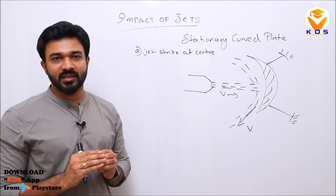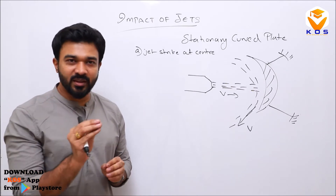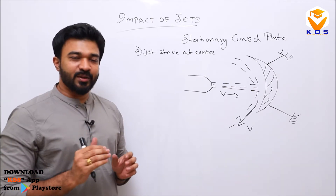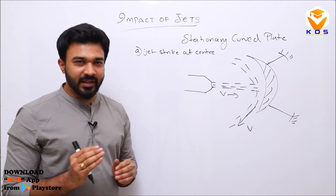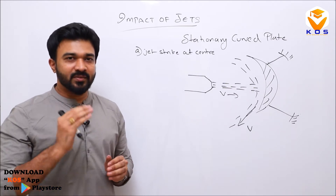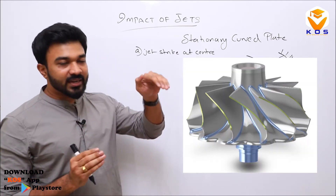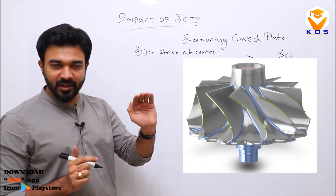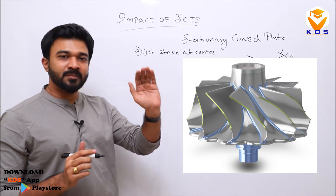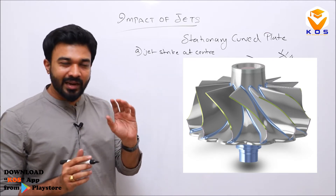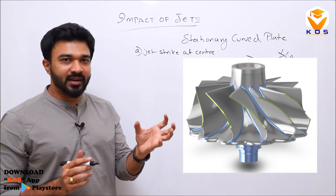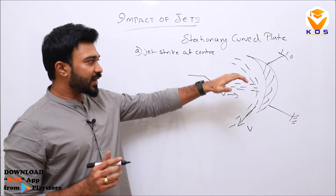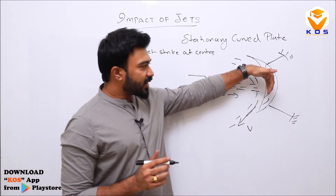We call it the blade angle, which is very important. When we are using turbines, instead of using flat blades, we will be using curved blades. We are going to have a bucket shape. It is very important to have a blade angle — that is why we use a curved blade.